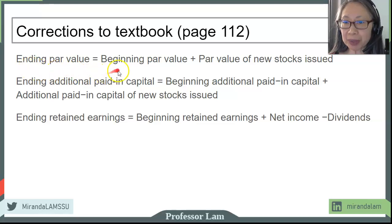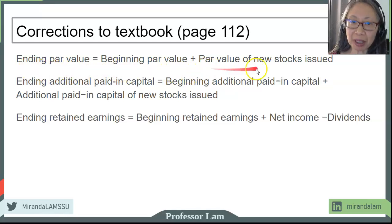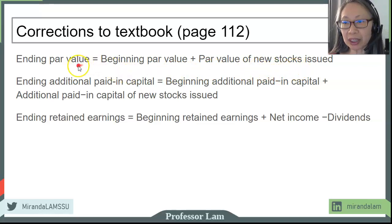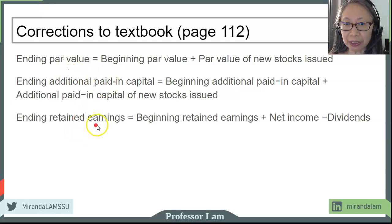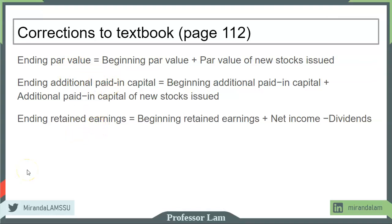The ending par value equals beginning par value plus the par value of any new stock issued — matching each item, par value, additional paid-in capital, and retained earnings to each component. We'll pause here and continue with Chapter 5 in the next video. See you soon.